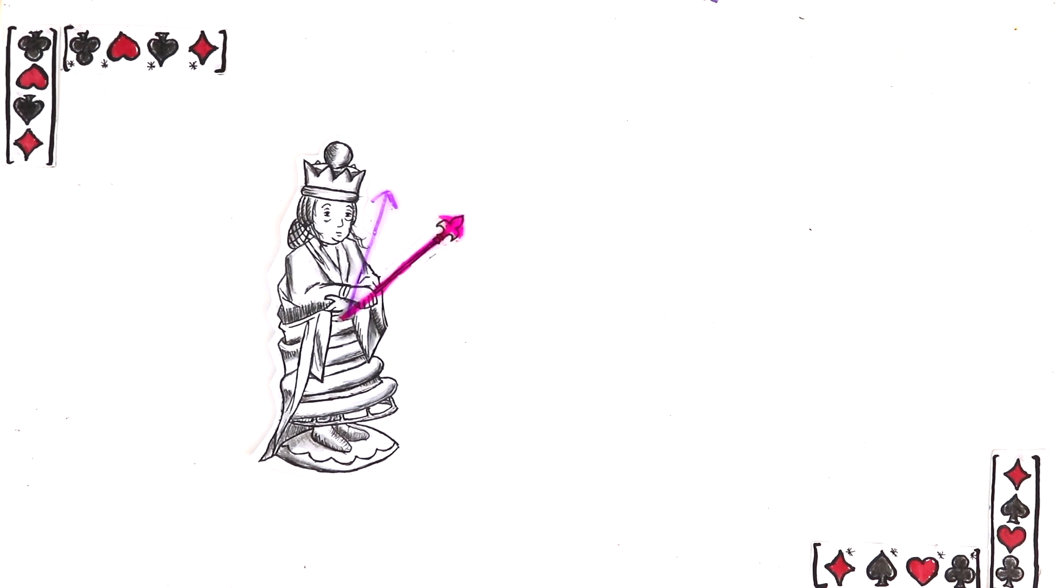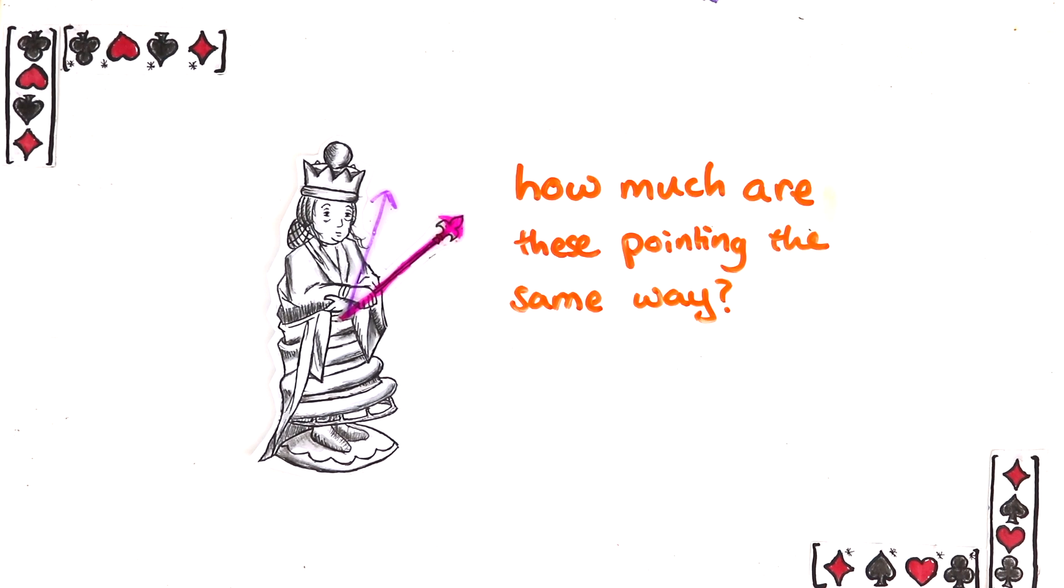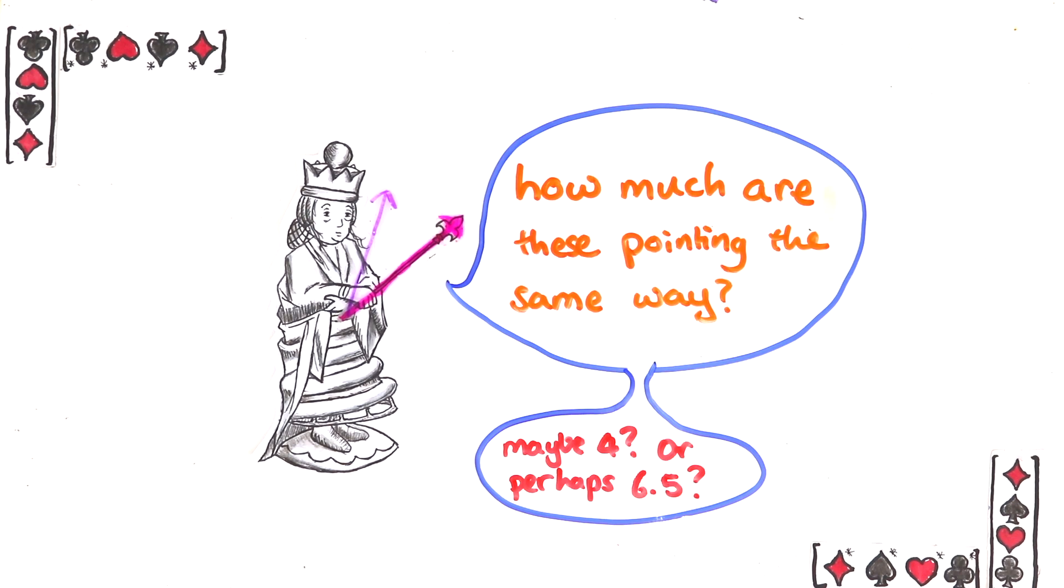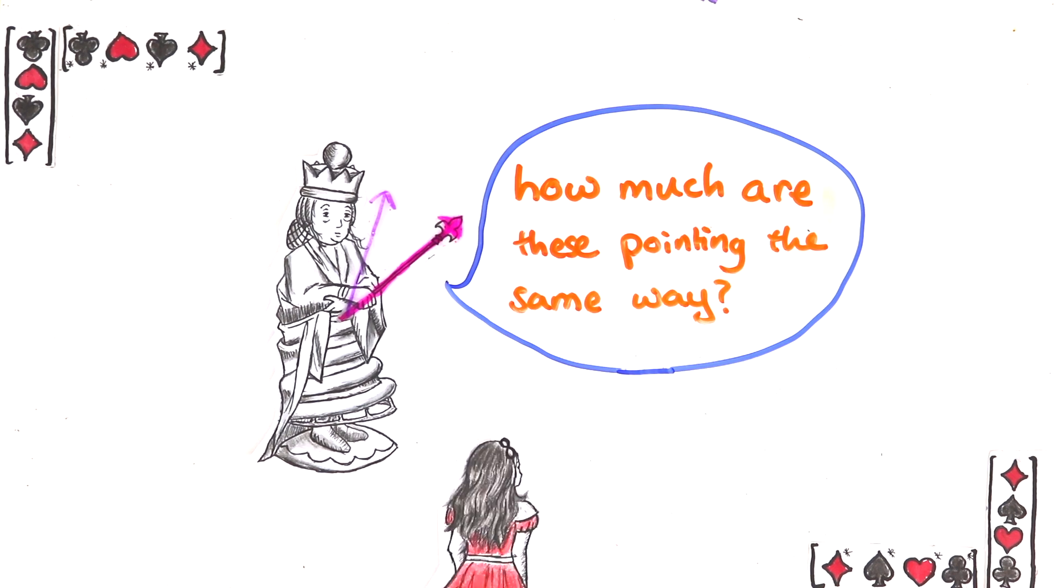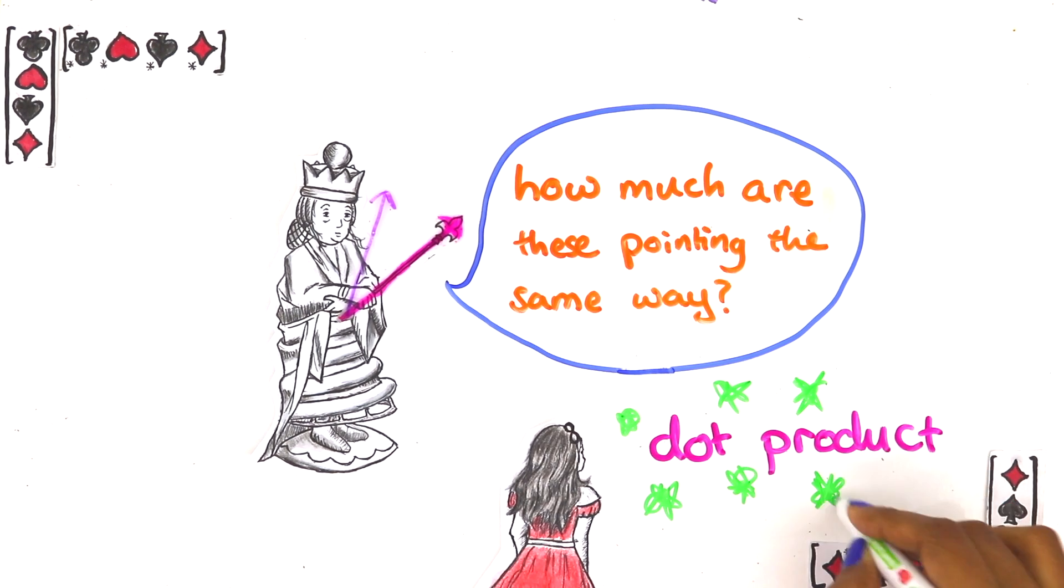Say you have these two vectors and you just want to know, how much are these pointing in the same direction and can I put a number to it? So that may not seem like a totally natural question for you yet, but come along with me for a few minutes and you'll start to see how useful an answer to this question can be and how the dot product solves this problem you didn't know you had.